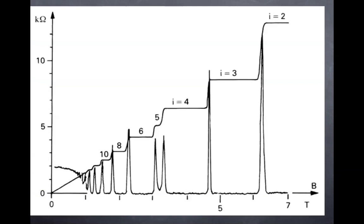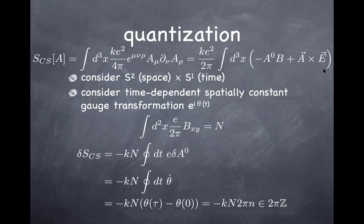This is the way you can write the Chern-Simons term, as you've already seen on previous slides. For now let's consider the following topology: space is compact without boundary — say S² or a torus — and the time direction is one-dimensional and also made periodic, as in the finite-temperature case. So space has no boundaries, it's a compact space, and time doesn't have a boundary either — it's periodic.